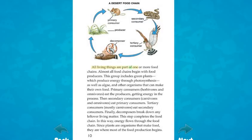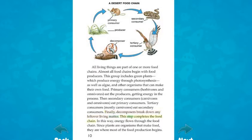All living things are part of one or more food chains. Almost all food chains begin with food producers — green plants, algae, and other organisms that can make their own food. Primary consumers, herbivores, and omnivores eat the producers. Then secondary consumers, carnivores and omnivores, eat primary consumers. Tertiary consumers, mostly carnivores, eat secondary consumers. Finally, decomposers break down any leftover living matter, completing the food chain. In this way, energy flows through the food chain, and since plants are organisms that make food, they are where most food production begins.